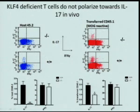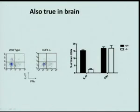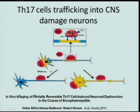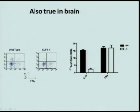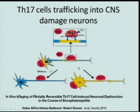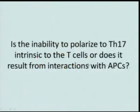These results from the spleen were also true in the brain: in wild-type hosts, IL-17-producing T cells trafficked to the brain, whereas in KLF4-deficient hosts they did not. This led us to the hypothesis that the lack of trafficking of KLF4-deficient T cells into the brain helped protect CNS tissue from the damage normally seen in EAE.